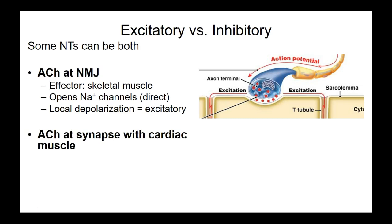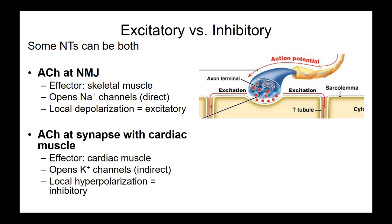Cardiac muscle has a different receptor for acetylcholine — one that opens potassium ion channels, and it does so in an indirect fashion. If we open potassium ion channels, positive charges leave the cell, taking the membrane potential further away from threshold. That means acetylcholine is inhibitory at cardiac muscle. So a single neurotransmitter can cause excitatory or inhibitory effects depending on the receptor type on the effector cell.